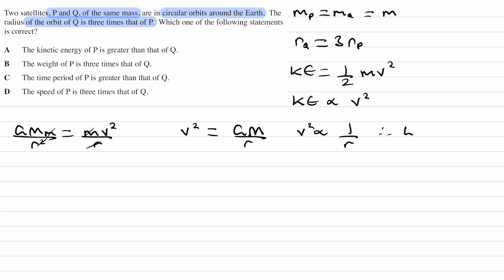And therefore, because kinetic energy is proportional to v squared, v squared is proportional to 1 over R, then kinetic energy is proportional to 1 over R.